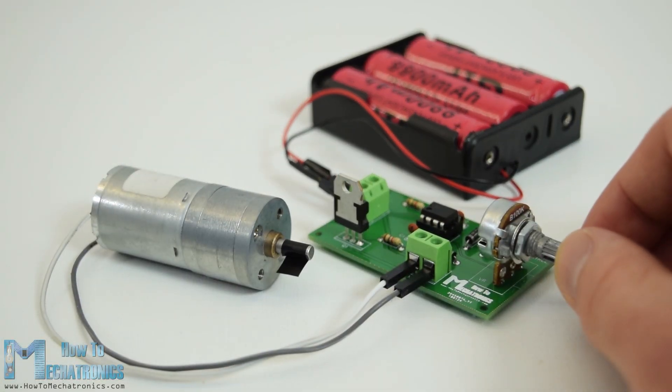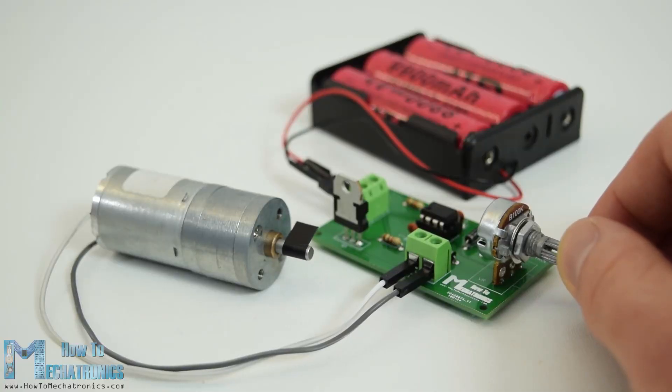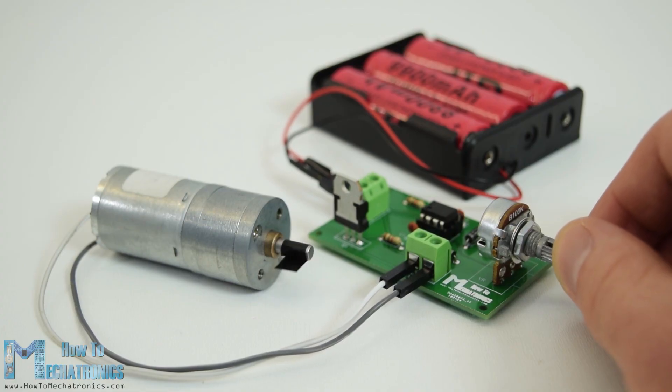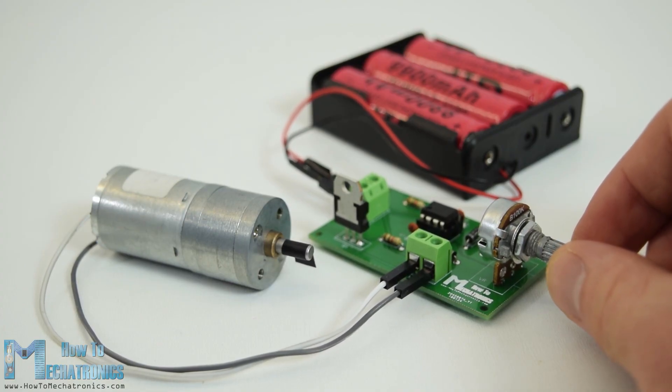Hello, Daniel Lelkovski here from HowToMechatronics.com. In this tutorial we will learn how to make a PWM DC motor speed controller using the 555 timer IC.